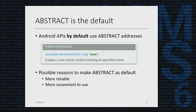Although less secure, Android APIs by default create abstract sockets. We don't really know why, but we suspect there are two possible reasons. First, abstract sockets are more reliable — if file system sockets are used and the socket files get accidentally deleted from the file system, all communications relying on those socket files will be interrupted. Another reason might be that abstract sockets are more convenient to use, as developers don't need to worry about file system-related issues.